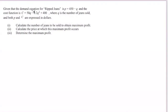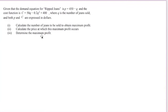Given that the demand equation for jeans is P = 450 minus Q, and the cost function is C = 50Q minus 0.2Q squared plus 400, where Q is the number of jeans sold and both P and C are expressed in dollars. Calculate the number of jeans to be sold to obtain maximum profit, then calculate the price at which this maximum profit occurs, and finally determine the maximum profit.